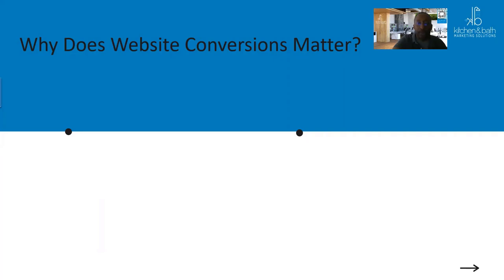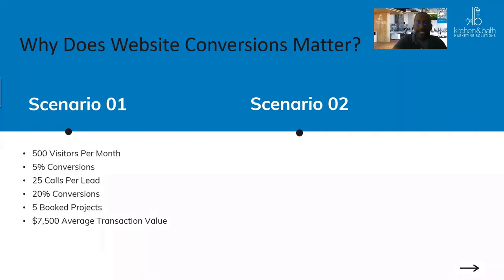Here's a real client example. Scenario one: before optimization, they had 500 unique visitors per month with a 5% conversion rate, equaling about 25 calls or potential leads. With a 20% sales closing rate — the industry average is 20-30% — that turned into 5 booked projects. At a $7,500 average transaction value, that equals $37,500 in monthly revenue.